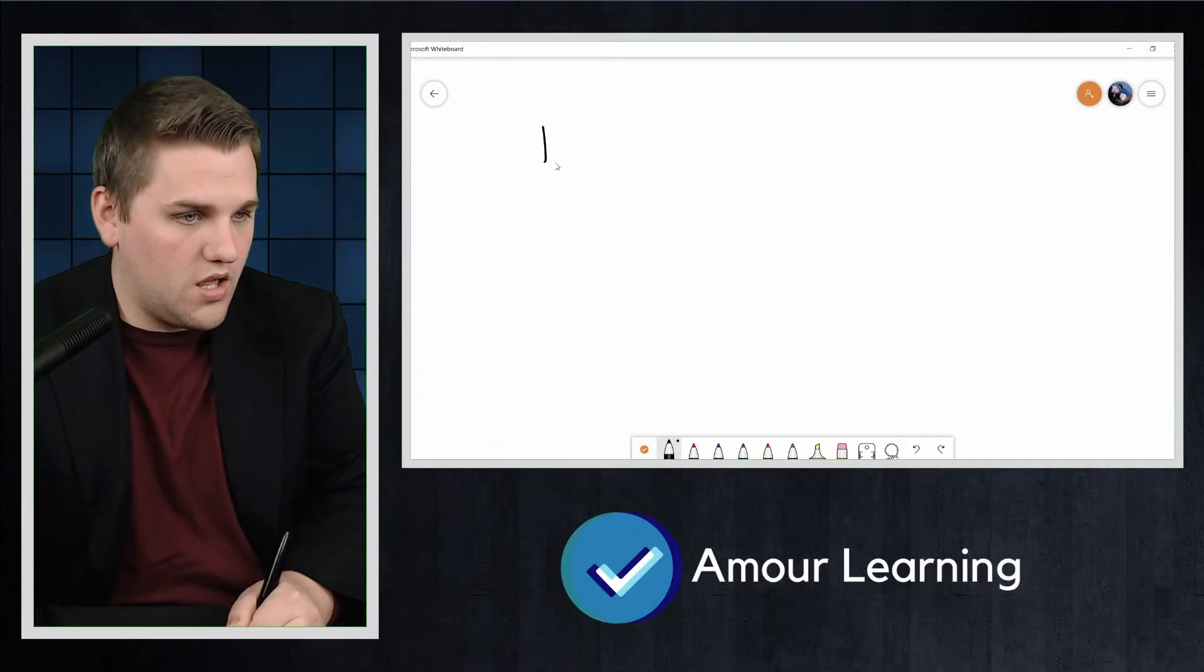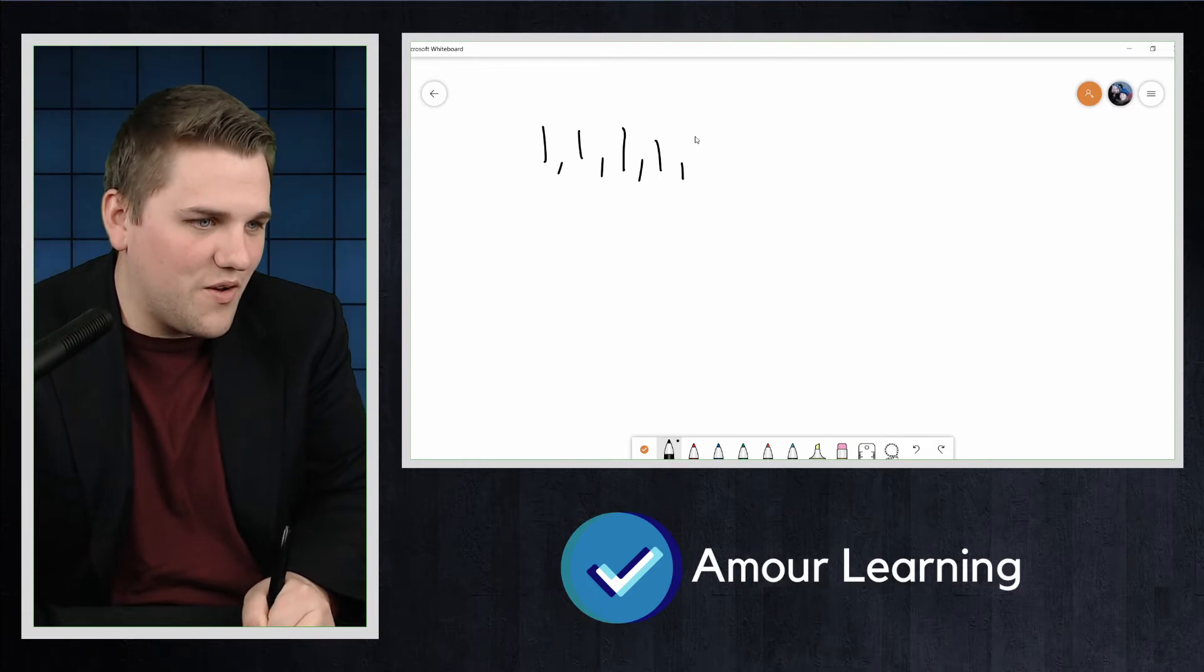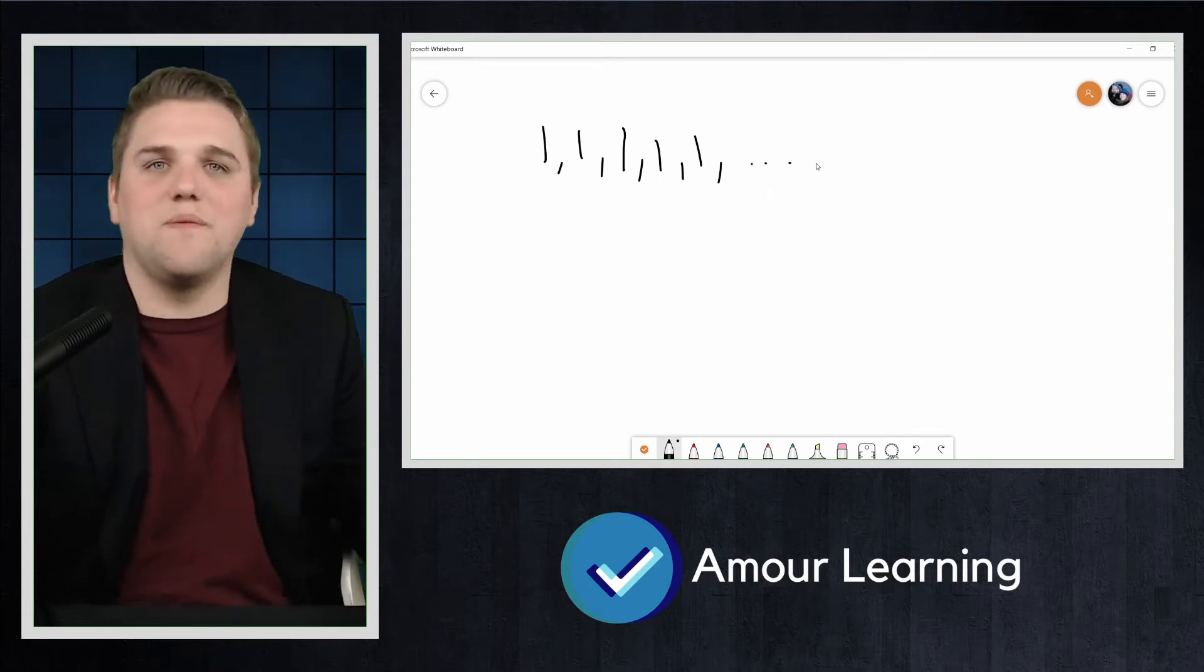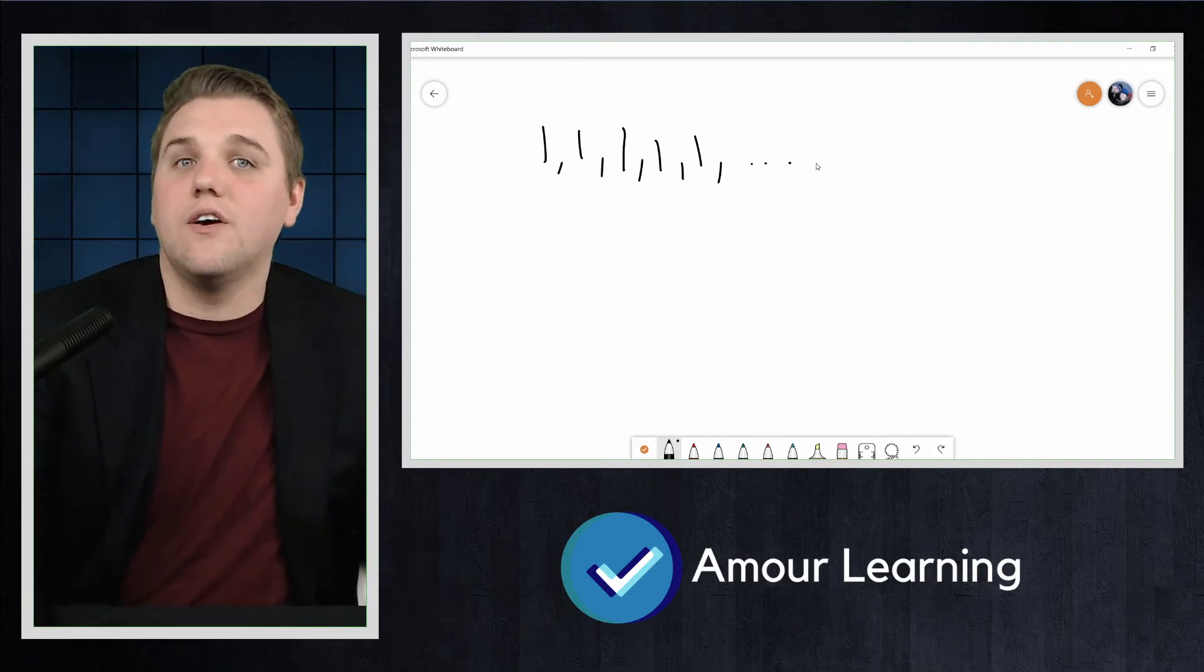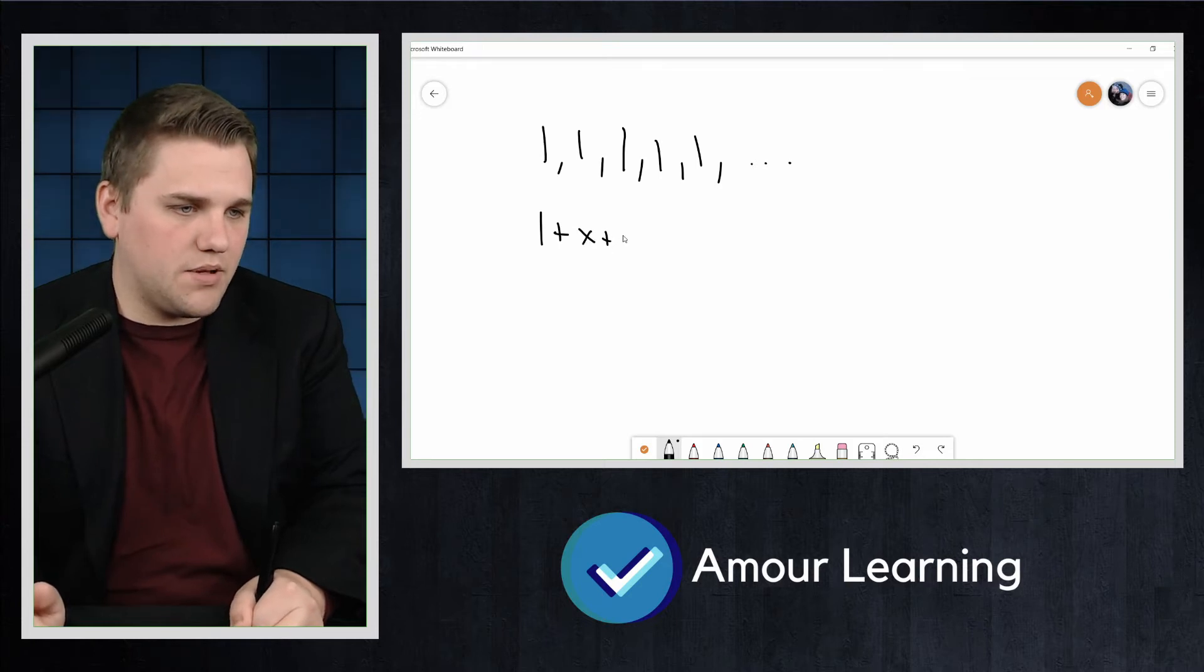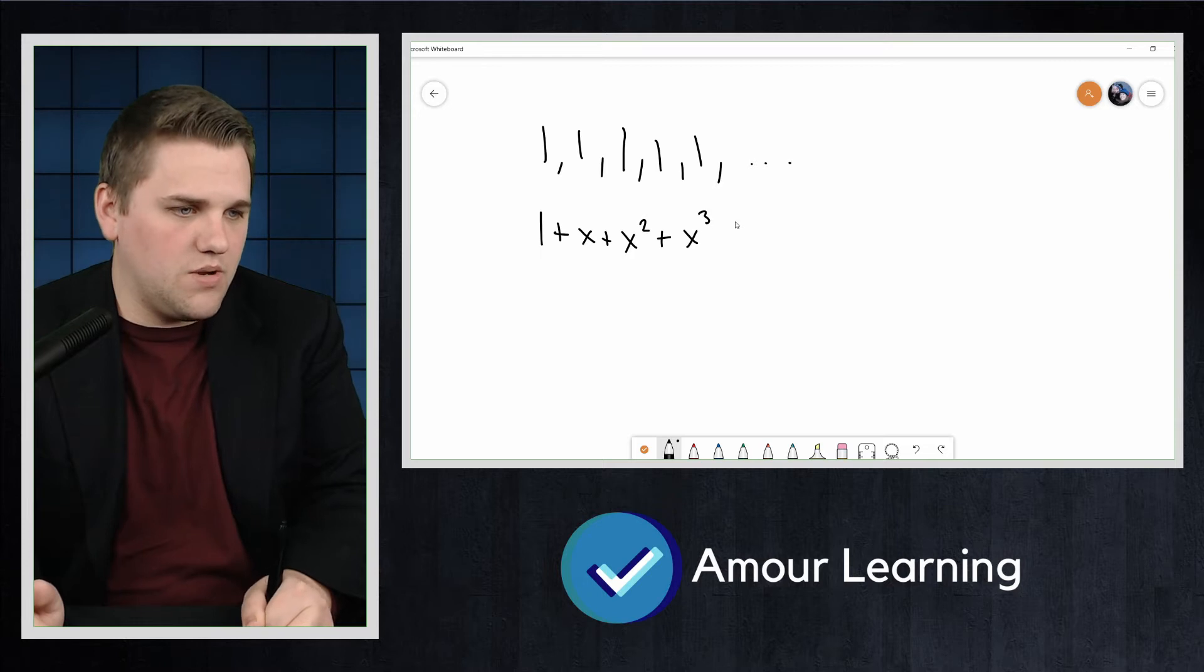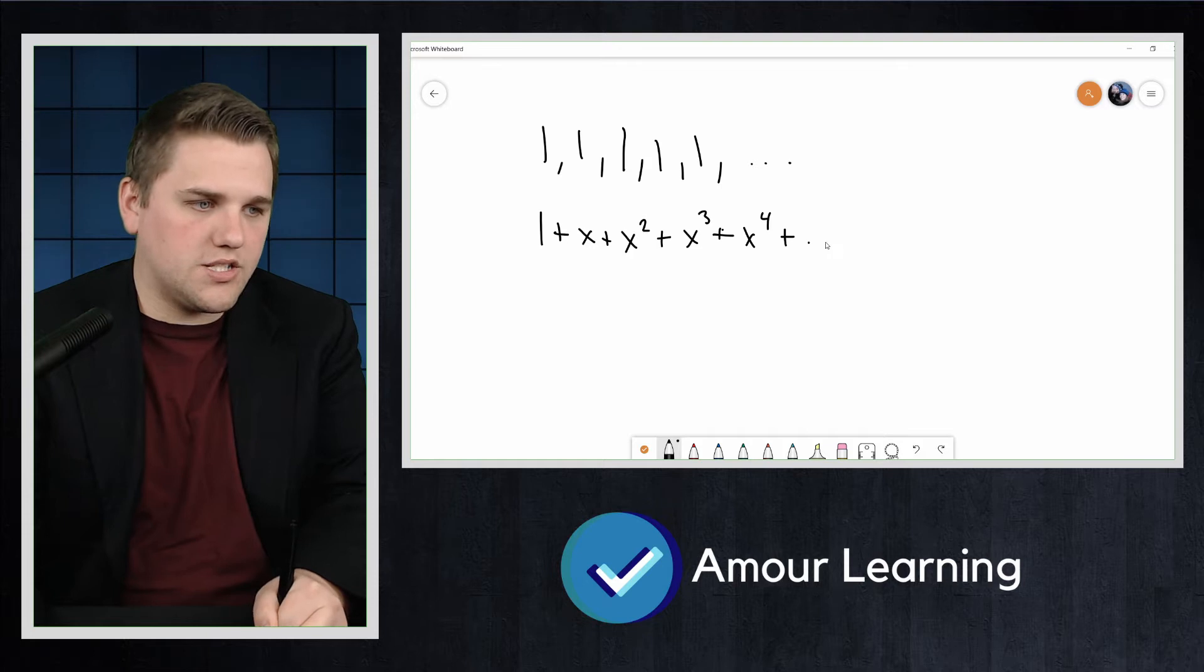Let's see what the generating functions are for some very simple sequences. The simplest of all being 1, 1, 1, 1, 1, and so on. What does the generating series look like? Well, it's simply 1 + x + x^2 + x^3 + x^4 and so on.